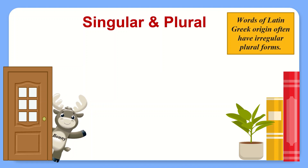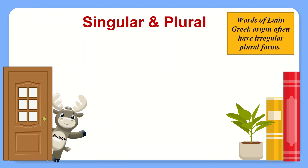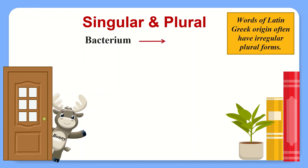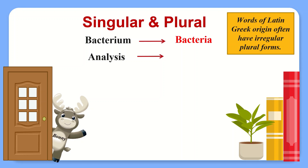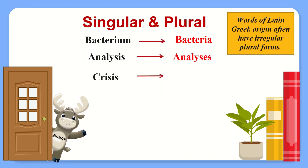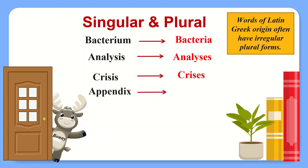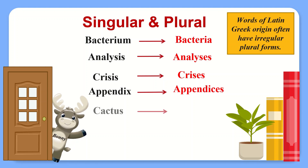Rule number three. Words of Latin or Greek origin often have irregular plural forms. For example: bacterium becomes bacteria, analysis becomes analyses, crisis becomes crises, appendix becomes appendices, cactus becomes cacti.